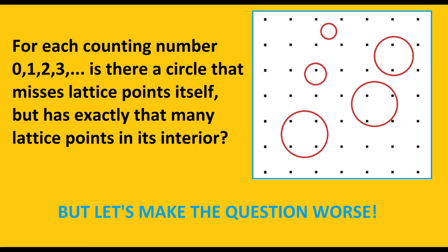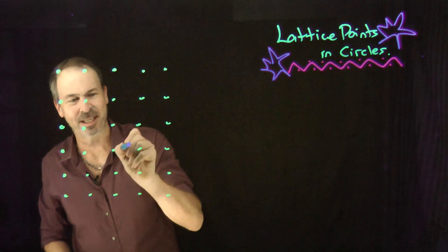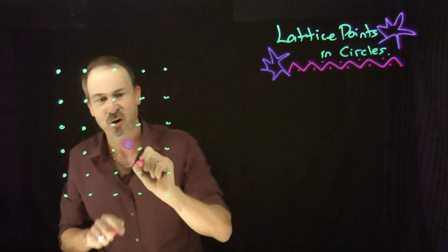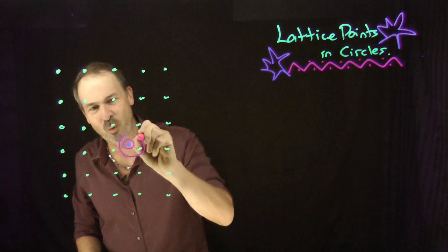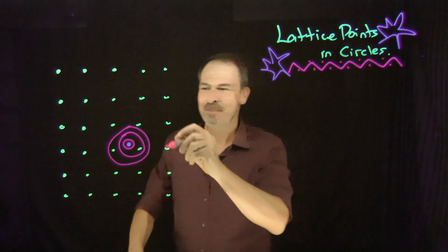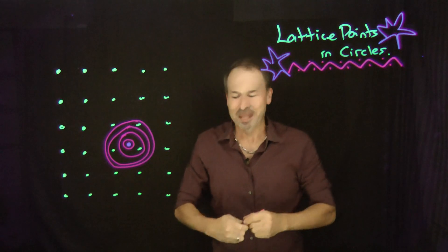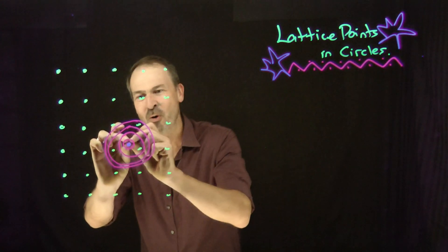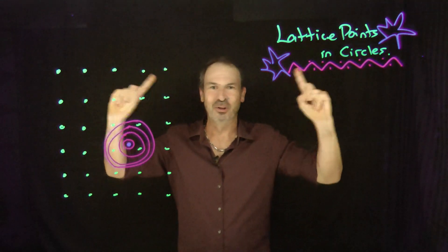That's a tough question. Actually, let's make the question worse. Could I do that and have all my circles be concentric? That is, I want to find a special place in the plane with the property that if I draw a little circle around it, I get zero lattice points inside. Make the circle a bit bigger, I get one lattice point on its inside. Make the circle a bit bigger still — two lattice points on its inside. Make the circle a bit bigger still, all centred about that same one point — three lattice points, four lattice points, and so on. Could there be a very special point in the plane with the property that I could grow concentric circles from that point that hit one, two, three, four, five lattice points at a time?